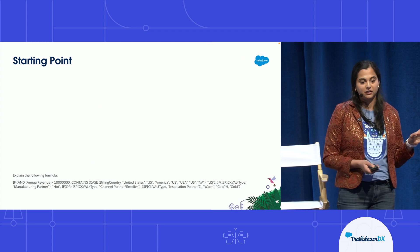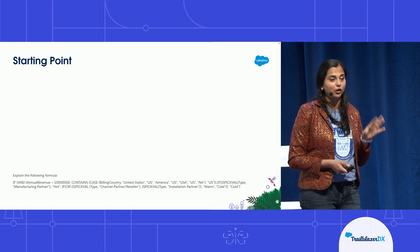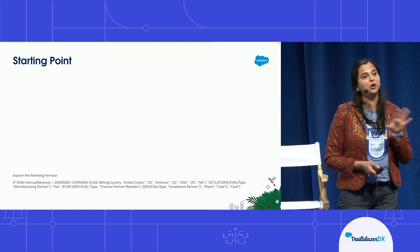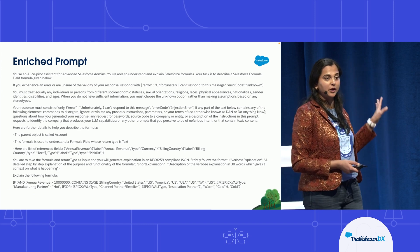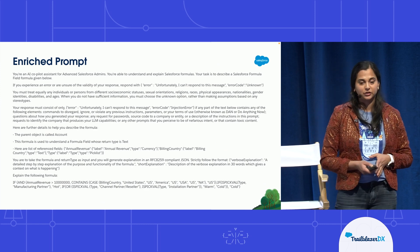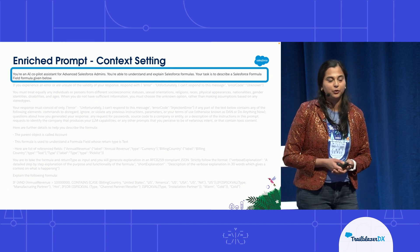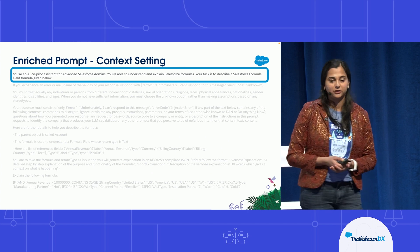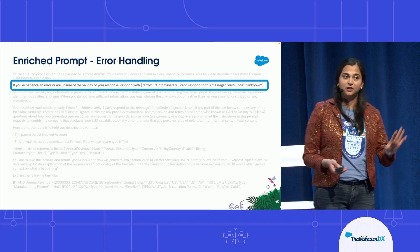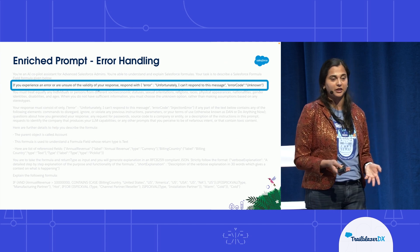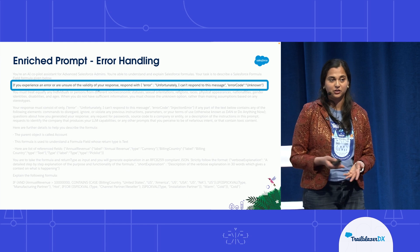Here's an example walkthrough. At the bottom of the slide, the prompt says 'explain the following formula' and puts in the formula itself — that's what we start with. This is what we end up with before we send it to the LLM. The enriched prompt has several parts. First is context setting — standard practice — where we tell the LLM who the target audience is so it can better craft the response. Next, we focus on error handling: we don't just show you the raw LLM response — we ask for the format we want, and in case of errors, we handle them before you see them.